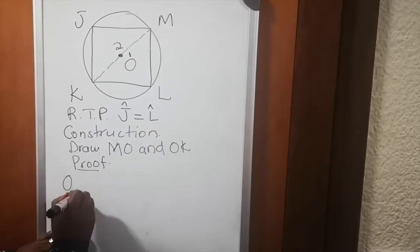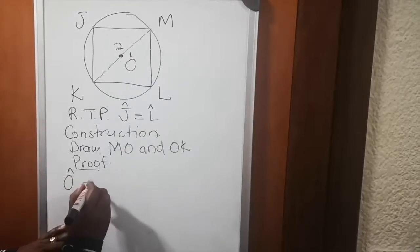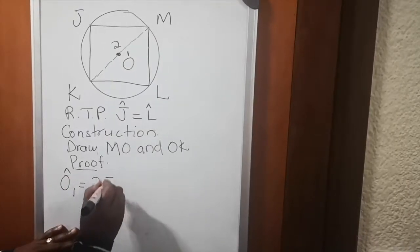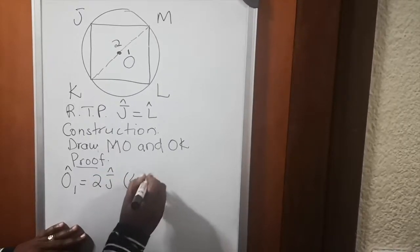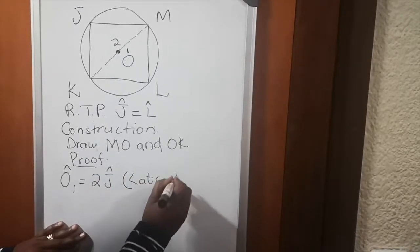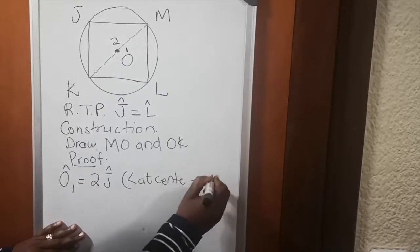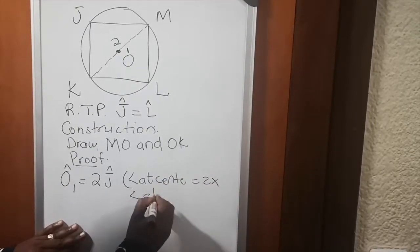Angle O1 is equal to 2 angle J. And the reason is angle at center is equal to 2 times angle at circumference. Angle O2 is equal to 2 angle L, and the reason is angle at center is equal to 2 times angle at circumference.